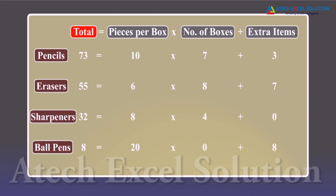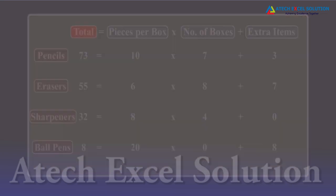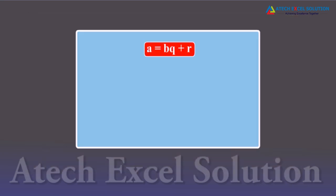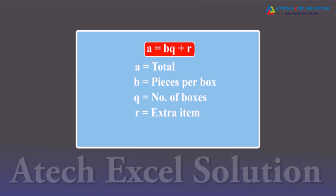If we consider the total as 'a' and pieces per box as 'b', we get the expression a = bq + r, where q is the number of boxes and r is the extra items. Here, q and r can be zero, and r is always less than b.